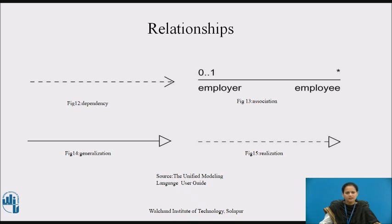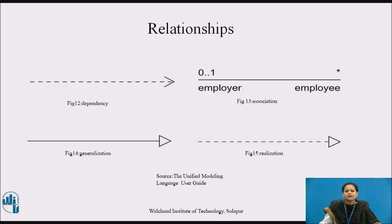An association is a structural relationship that describes a set of links, a link being a connection among objects. Aggregation is a special kind of association representing a structural relationship between a whole and its parts. Graphically, an association is rendered as a solid line, possibly directed, occasionally including a label, and often containing other adornments such as multiplicity and role names, as shown in figure 13. A generalization is a specialization-generalization relationship in which objects of the specialized element, the child, are substitutable for objects of the generalized element, the parent. The child shares the structure and behavior of the parent. Graphically, a generalization relationship is rendered as a solid line with a hollow arrowhead pointing to the parent, as shown in figure 14.